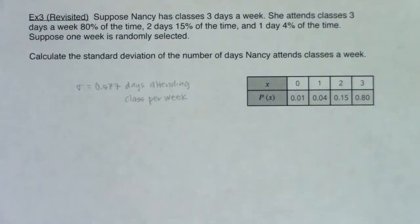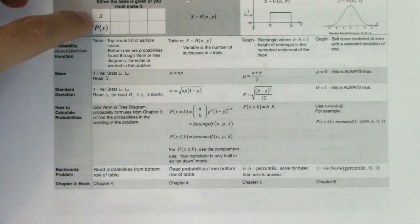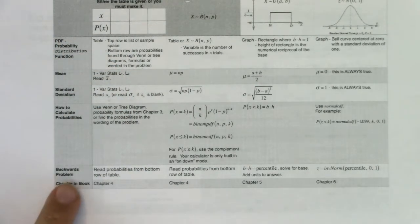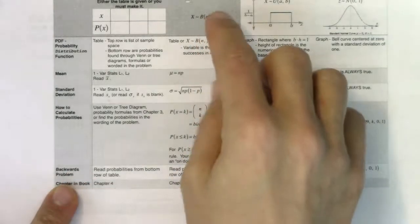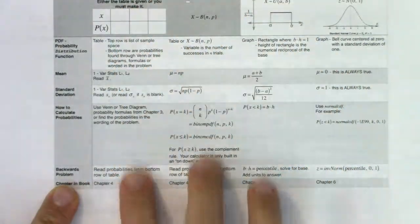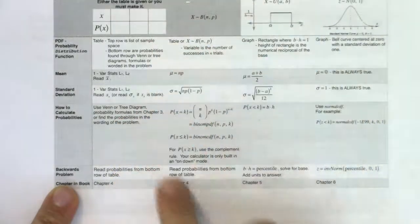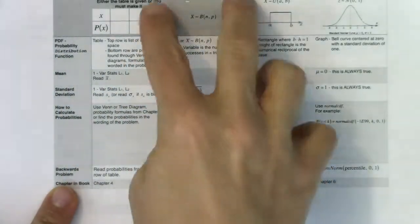Don't forget those units. With that, we're closing out the first third of this chapter. We've gone through this column — we've talked about how to make a PDF, how to do a mean, a standard deviation, and how to calculate probabilities. If you ever get a backwards problem, read probabilities from the bottom row of your table and answer questions about the top row. Next, we'll cover the law of large numbers, and then we're going to come back and do the binomial distribution.